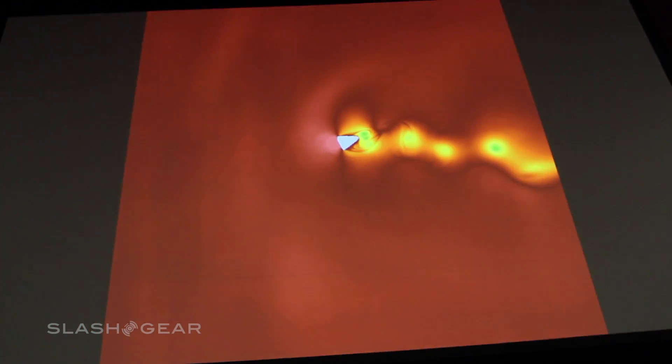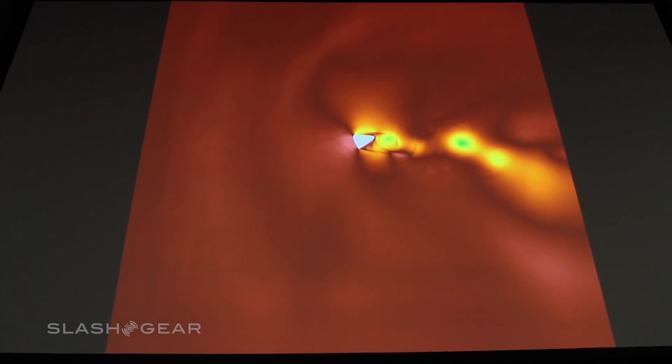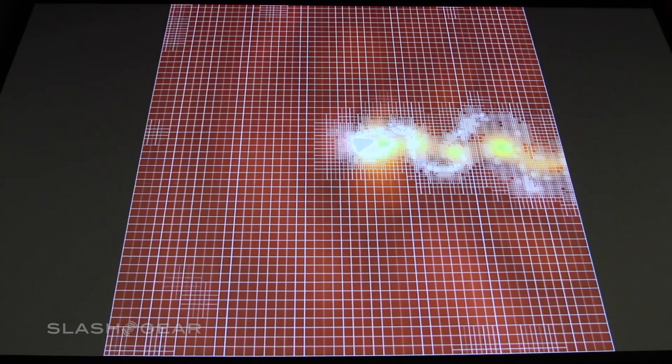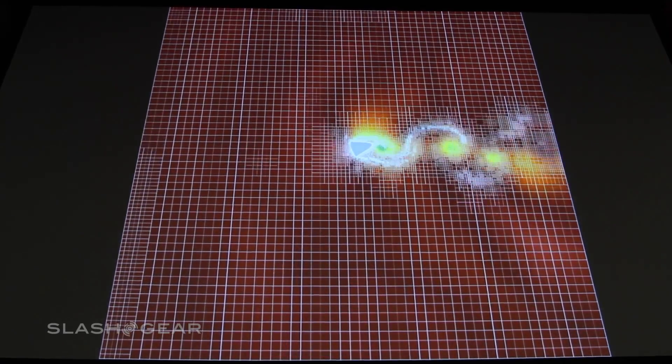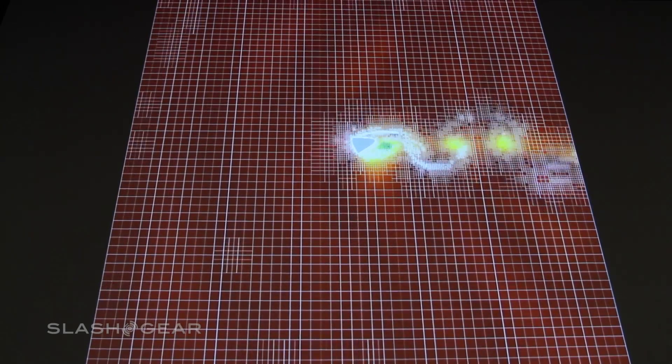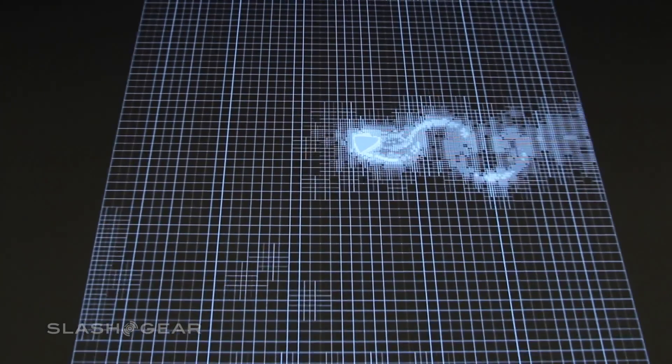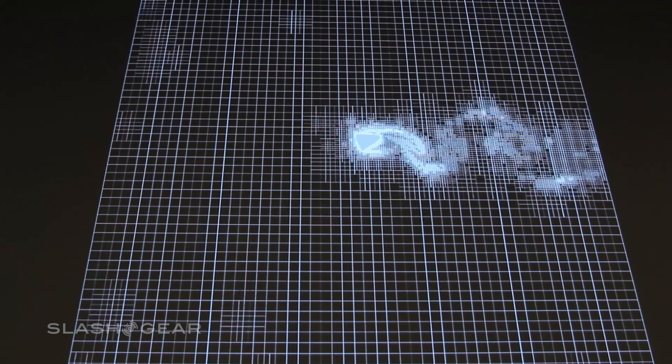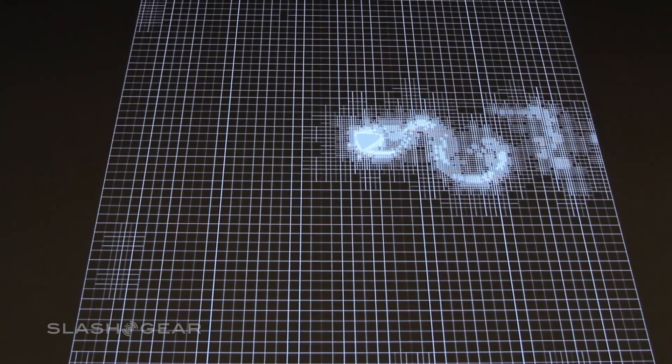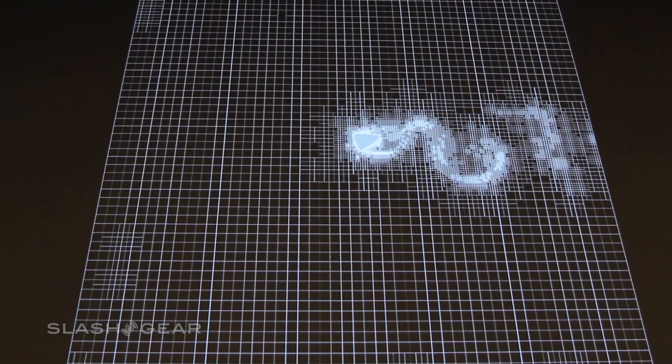So if we play that again and this time we superimpose the grid lines over the top, you'll see how the grid lines map and follow exactly where that flow is. So you can see those vortices underneath it. You can see the curls of the grid as they map to that flow.